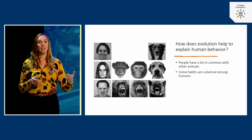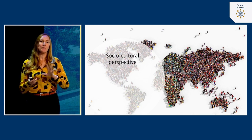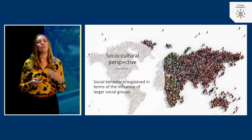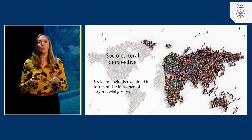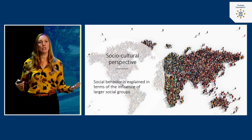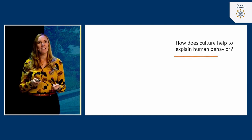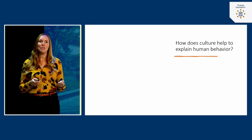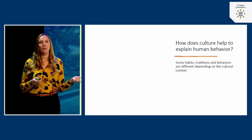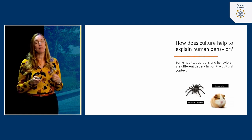Evolution theory cannot explain everything, because humans also differ between cultures — and that's where the social cultural perspective comes in. In the social cultural perspective, behavior is explained in terms of the influence of the larger group you live in: what are the ways people connect to each other in that specific culture, and what is normal behavior in the specific group you live in? This perspective helps us notice that some habits, traditions, and behaviors differ depending on cultural context.